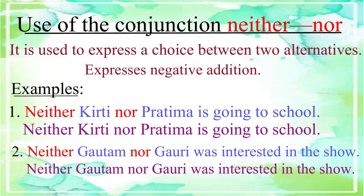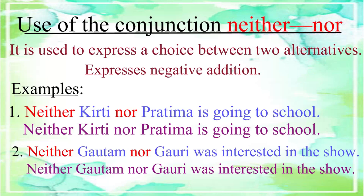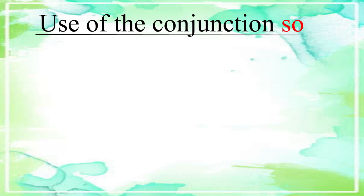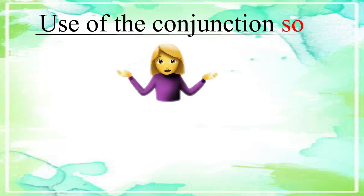Here too, the conjunction 'neither...nor' is used to join two negative sentences: 'Gautam was not interested in the show' and 'Gauri was not interested in the show.' We shall now learn the use of a very simple conjunction — 'so' — which many times is misused. Let us see how.